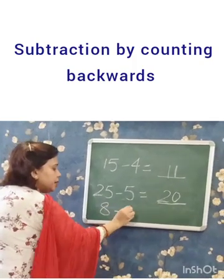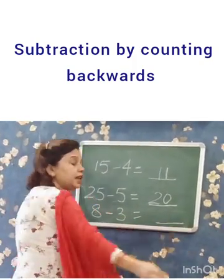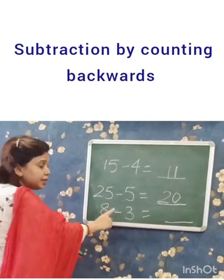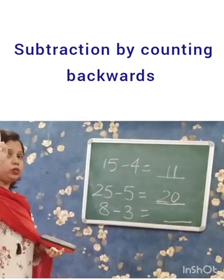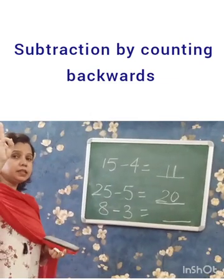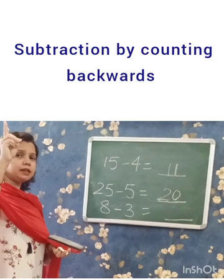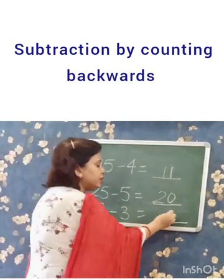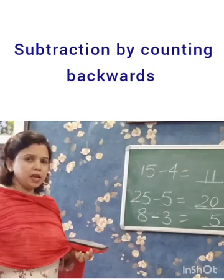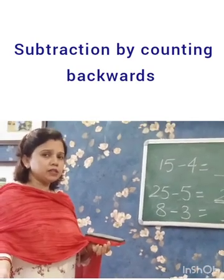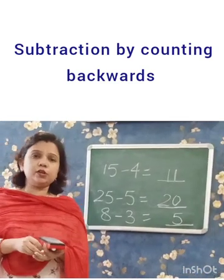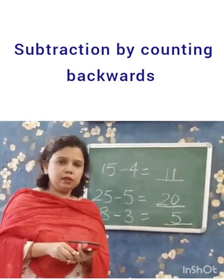8 minus 3 — let us count backward. Take out 3 fingers: 8, 7, 6, 5. So the answer is 5. Did you understand how to count backward and subtract? So children, all these you will practice today in your maths copy. Thank you.